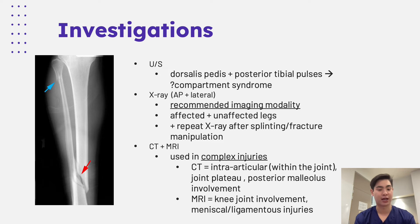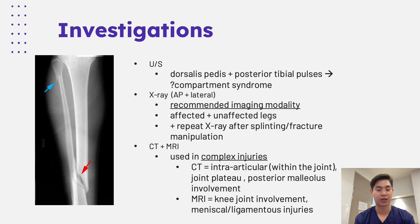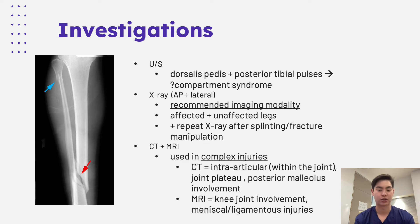With regards to other modalities like CT and MRI, they're generally reserved for more complex injuries. CT would be used in instances involving the joint, the tibial plateau, or the posterior malleolus — areas surrounding joints with higher complexity. MRI, because it's better at looking at soft tissue, would be used to look for meniscal and ligamentous injuries.